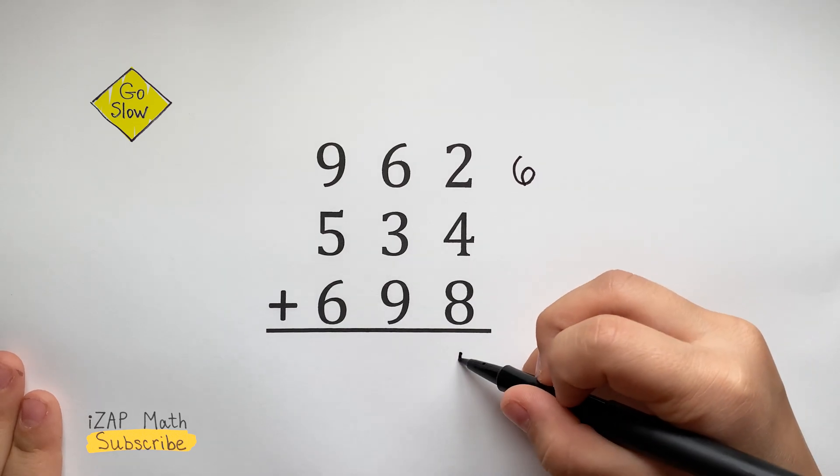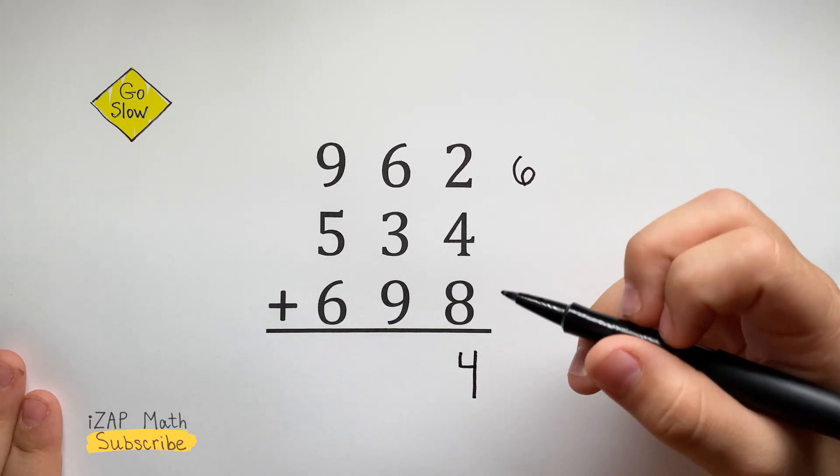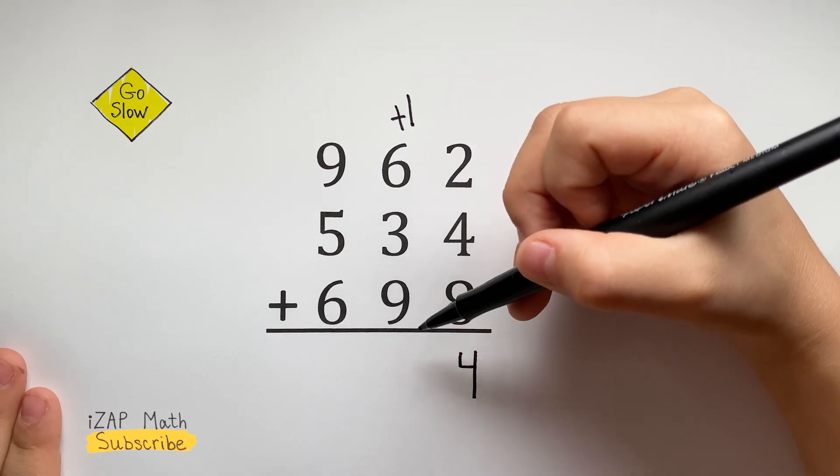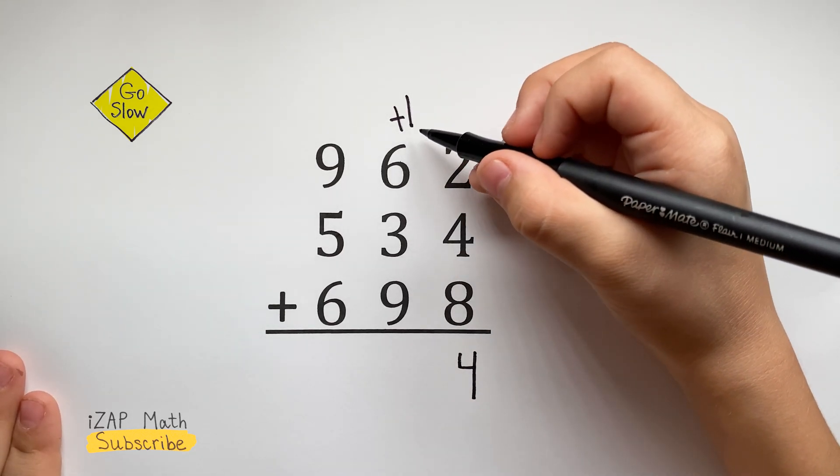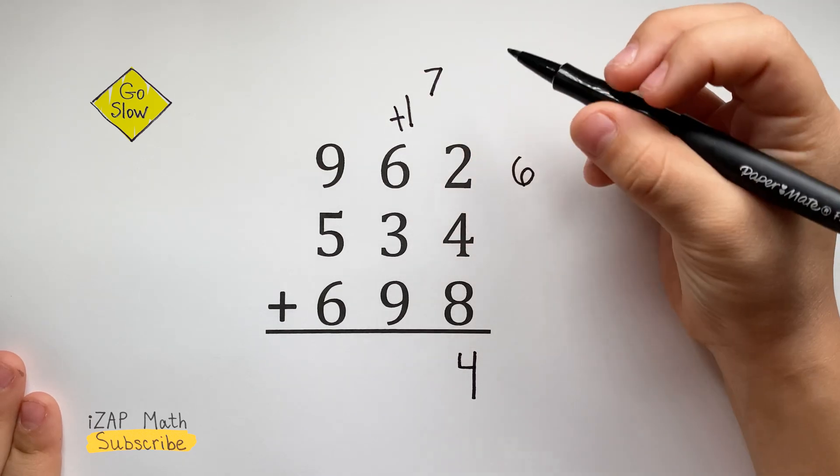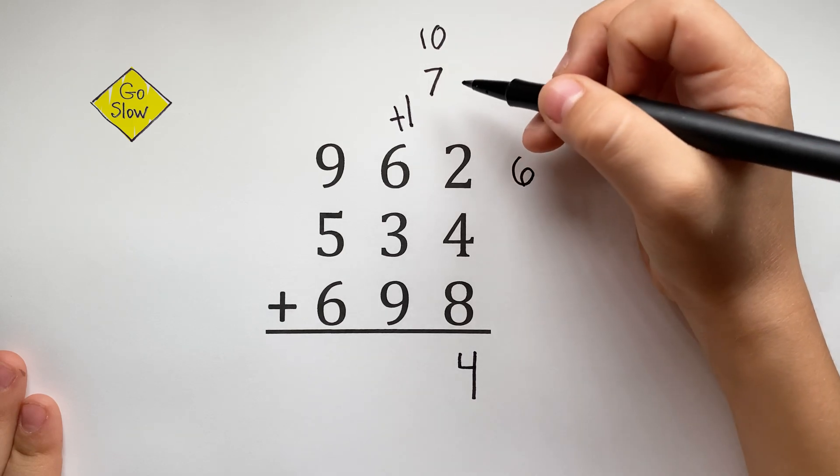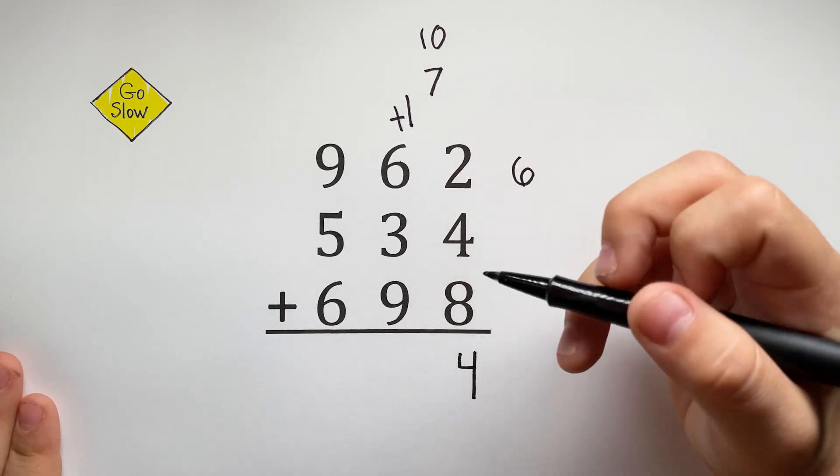So we're going to put the 4 under the ones column and the 1 on top of the tens column. 1 plus 6 equals 7. 7 plus 3 equals 10. 10 plus 9 equals 19.